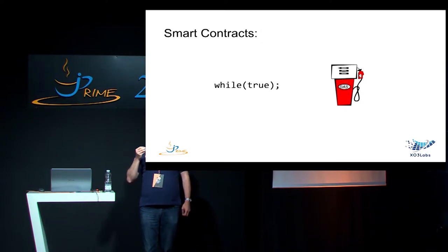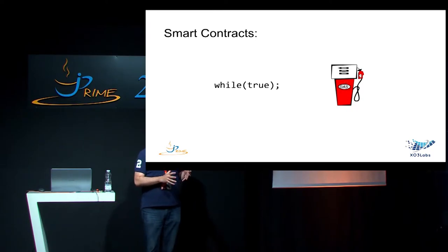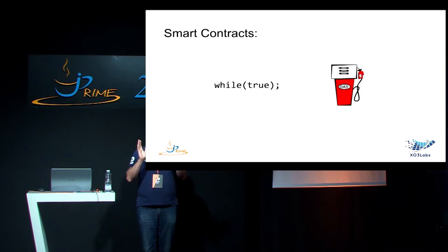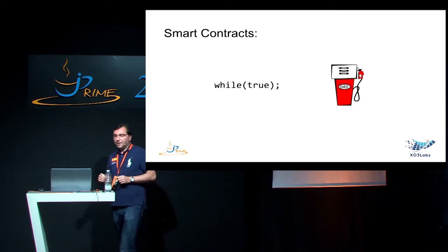If you are sending a transaction to a smart contract on the Ethereum blockchain, you have to attach a little quantity of gas to the transaction. When the execution starts, the gas will be consumed progressively by the virtual machine, and if it reaches zero your transaction won't get executed until it is finished. If your transaction reaches its end and we still have some gas available, then it's fine, and the remaining gas will be sent back to the initiator of the transaction.